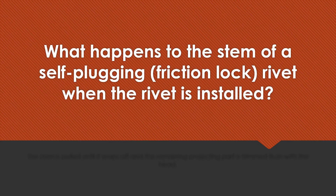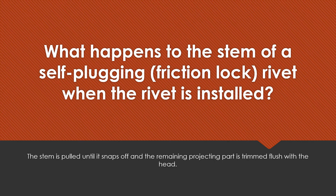What happens to the stem of a self-plugging friction lock rivet when the rivet is installed? The stem is pulled until it snaps off, and the remaining projecting part is trimmed flush with the head.